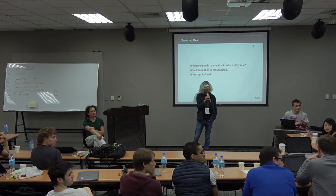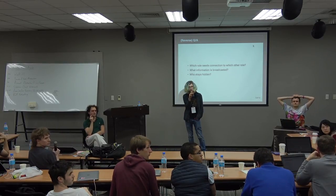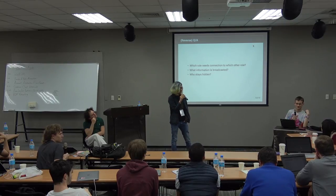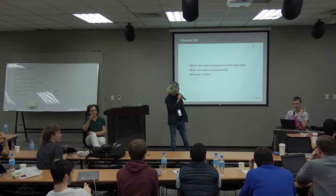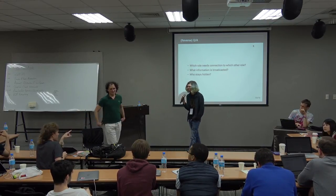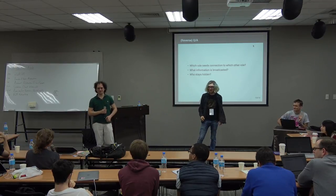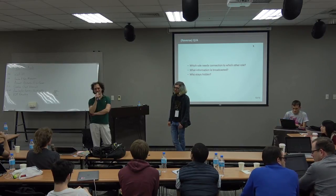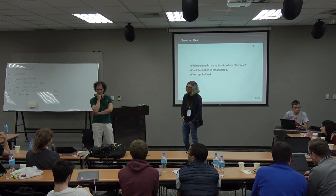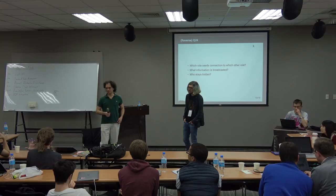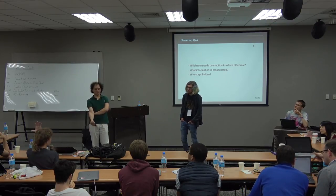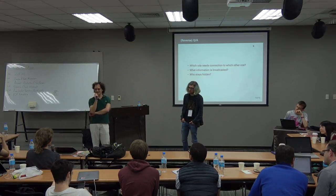With upcoming consensus changes moving to a weak subjectivity model, you could just throw away everything before the recent checkpoint. You may need archival nodes for DApps that care about old data, but it makes sense to have secondary archives for that. The idea of stateless clients and self-authenticating blocks also doesn't require a consensus protocol change — it seems feasible to implement a new sync mode that uses witness data to stay up with the chain head while backfilling everything.